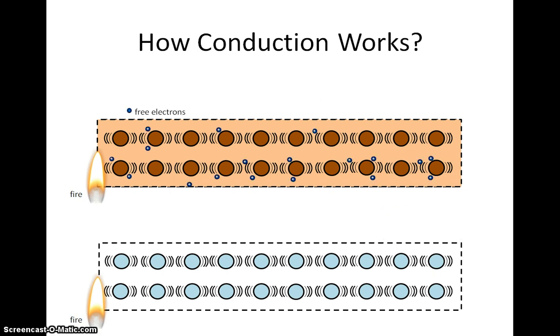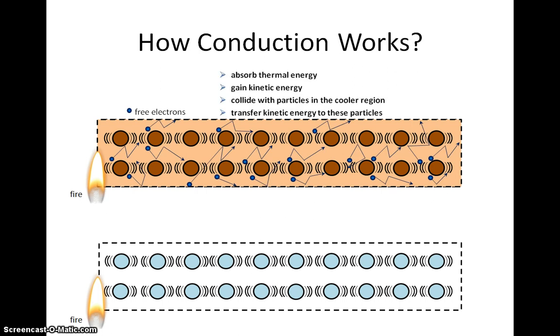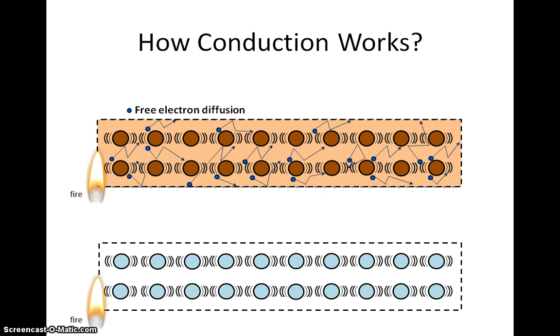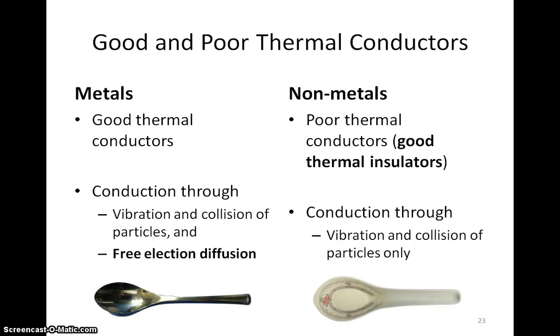Metals have free electrons, which are able to move through the metal. They transfer the energy that they gain from the hotter end to other electrons and particles through collisions. This process is known as free electron diffusion.